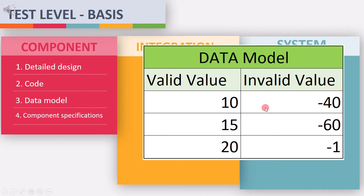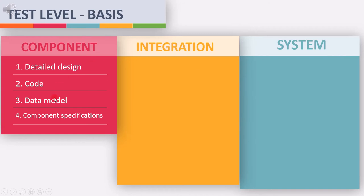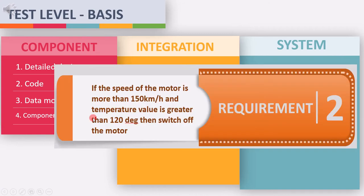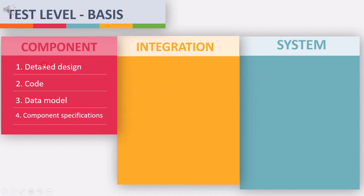Data model can help in selecting the input data and validating it against the expected output. The fourth requirement is component specification, which refers to specific documents that lay out how the component is implemented and its purpose. If the tester knows how the component is implemented, it helps them write robust test cases. So the four requirements for component testing are: detailed design, code, data model, and component specification.